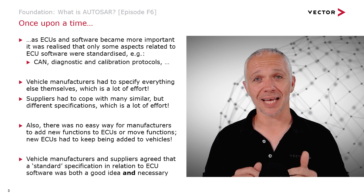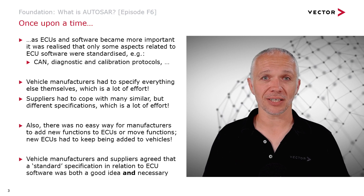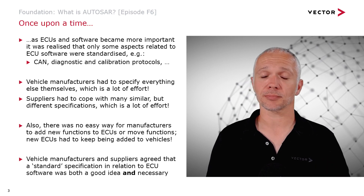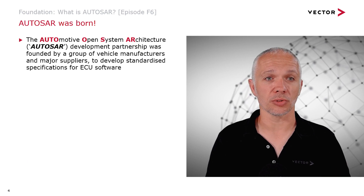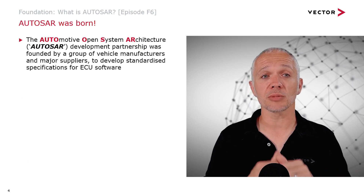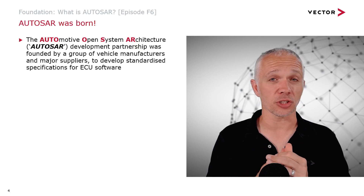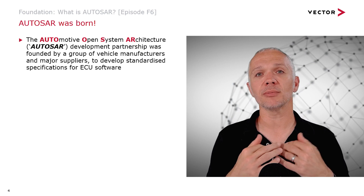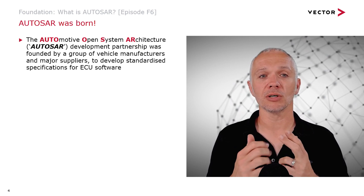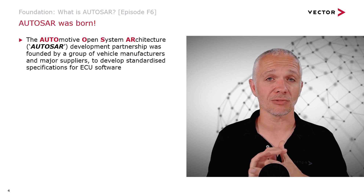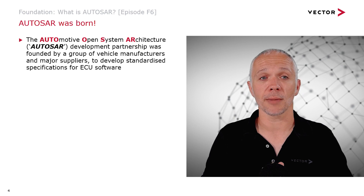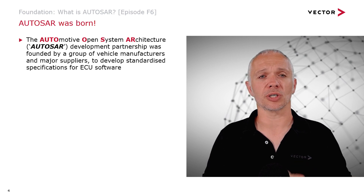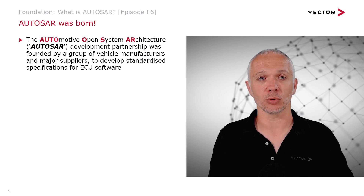Vehicle manufacturers and suppliers agreed that a standardised specification for ECU software was both a good idea and necessary, and the result of this agreement was AUTOSAR — the Automotive Open System Architecture. It is an abbreviation, so it should always be capitalised all the way through. A development partnership was founded by a group of vehicle manufacturers and major suppliers to develop a standardised set of specifications for ECU software — not just manufacturers, not just suppliers, but both working together. Sometimes people call it the AUTOSAR consortium, but technically it's the AUTOSAR Development Partnership.